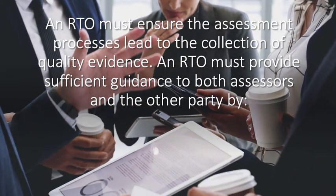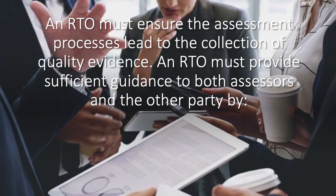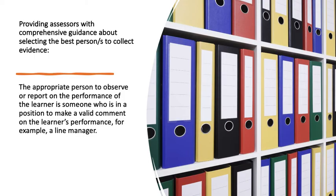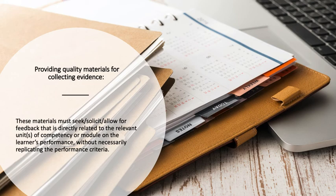An RTO must ensure the assessment processes lead to the collection of quality evidence. An RTO must provide sufficient guidance to both assessors and other parties by providing assessors with comprehensive guidance about selecting the best persons to collect evidence. The appropriate person to observe or report on the performance of the learner is someone who is in a position to make a valid comment on the learner's performance — for example, a line manager. These materials must seek, solicit, and allow for feedback that is directly related to the relevant units of competency or module on the learner's performance without necessarily replicating the performance criteria.